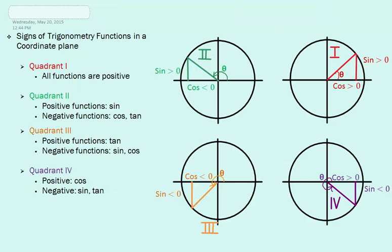When a right triangle is placed in a coordinate plane, the placement of the right triangle affects the sign of our trigonometry functions. Let's look at each coordinate individually. In coordinate 1, all functions are positive. In coordinate 2, we see that sine is a positive function, while cosine and tangent are negative. To find theta, we would have to take 180 minus theta to get our angle. In coordinate 3, the only positive function is tangent, while sine and cosine are negative.